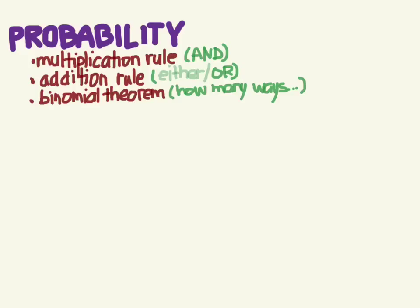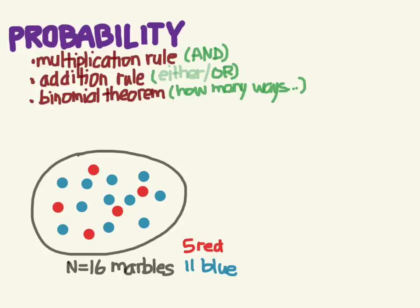First, let's pretend you have 16 marbles — five of them are red and 11 are blue. Someone asks: what is the probability of picking first a blue one and then a red one? At first glance you'd be tempted to say this is easy — probability is how many ways there are to do something over the total number of ways. So 11 out of 16 for blue, and 5 out of 16 for red. But it's not that easy.